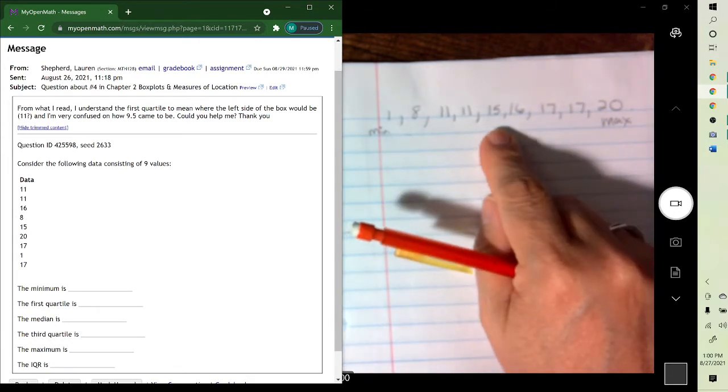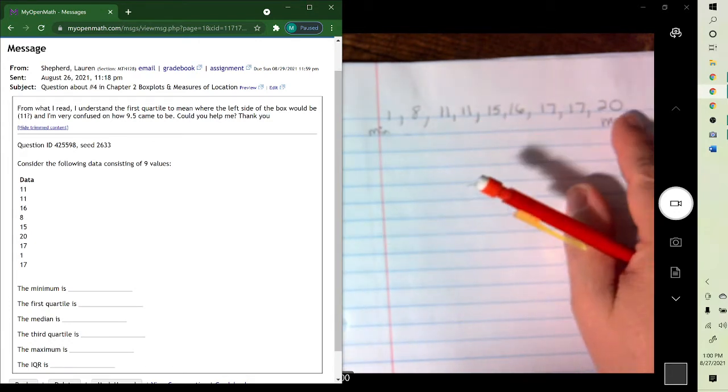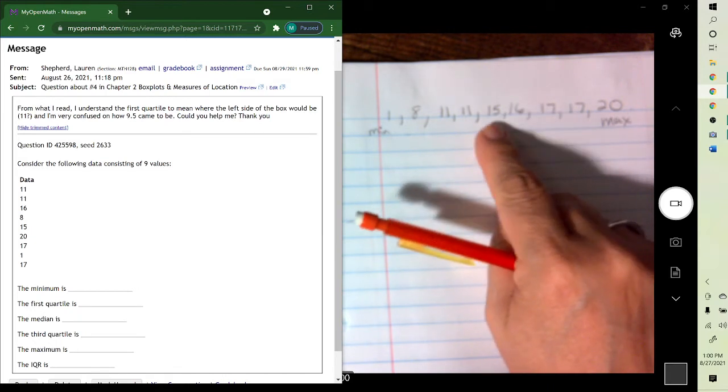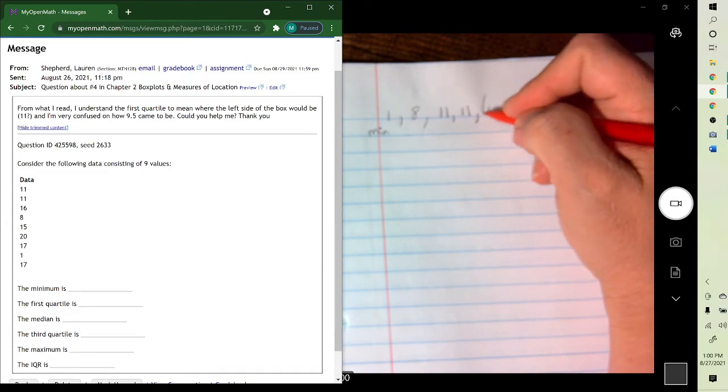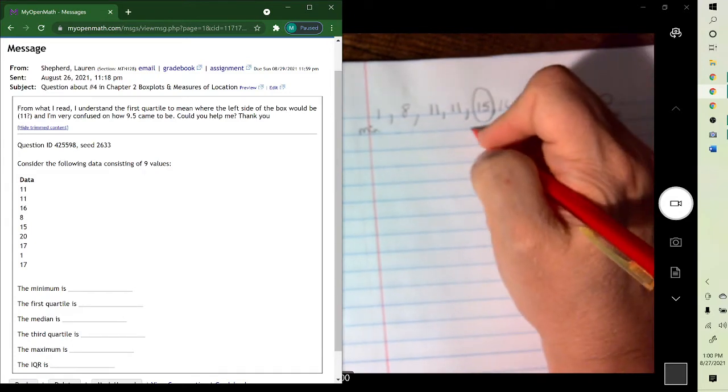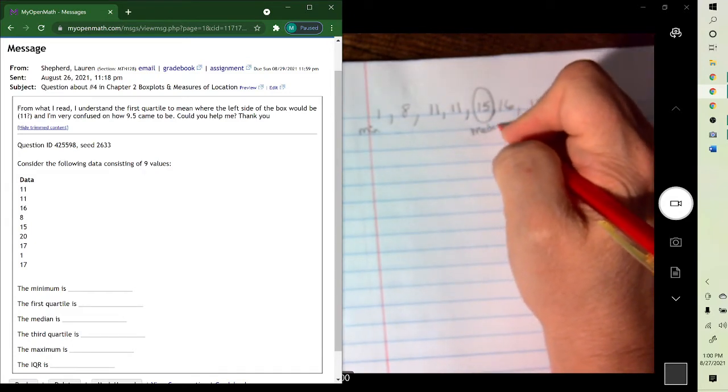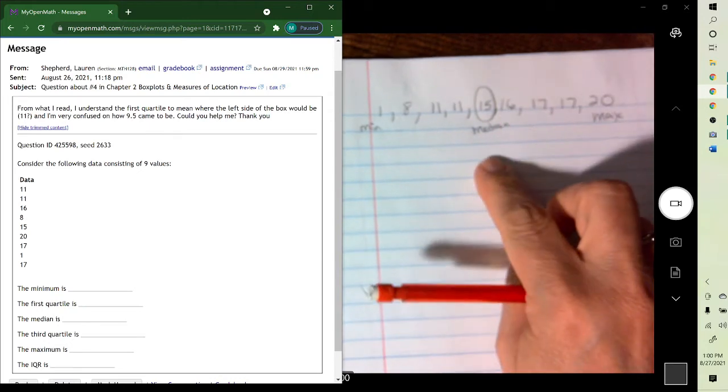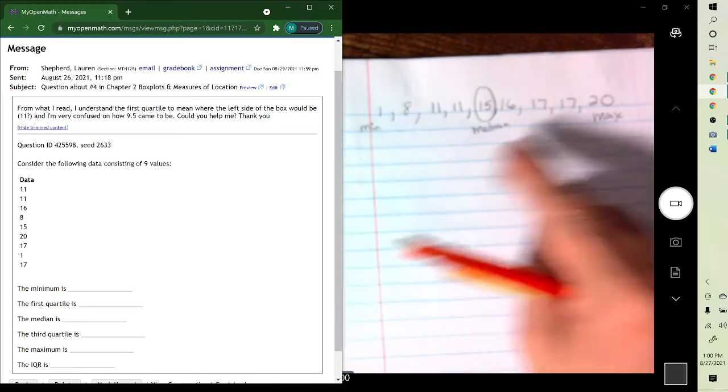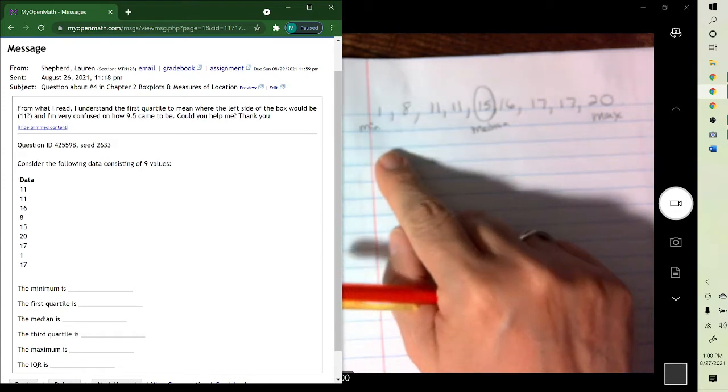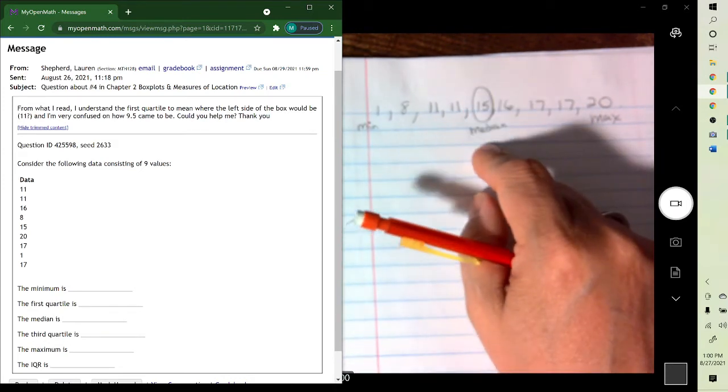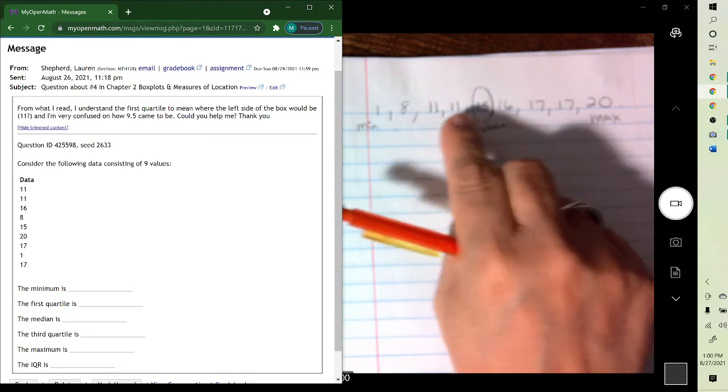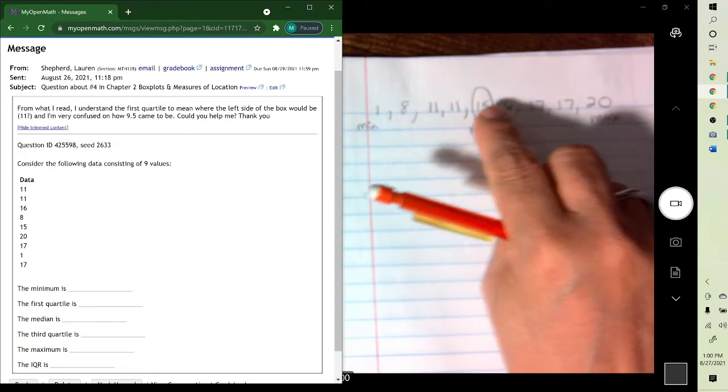Now the first thing you want to do is find the median, and the median is the middle number. I think you were including the median when you were finding your lower and upper quartile, but you want to make sure you don't. When you pick the median, then you don't use that. You use the data below and the data above.